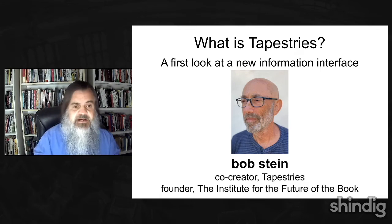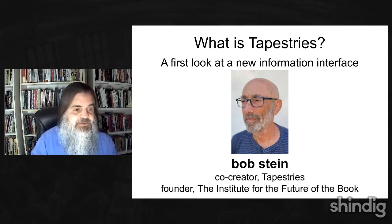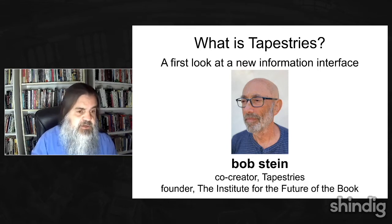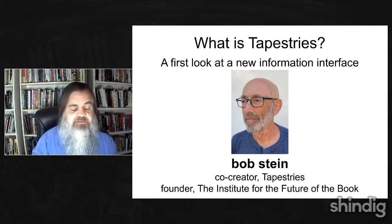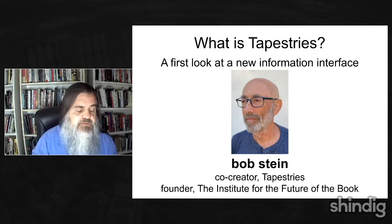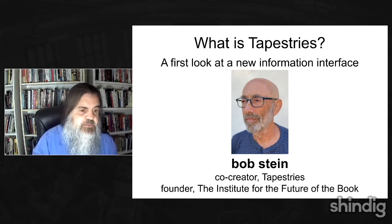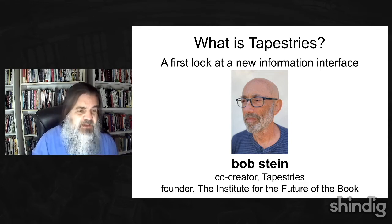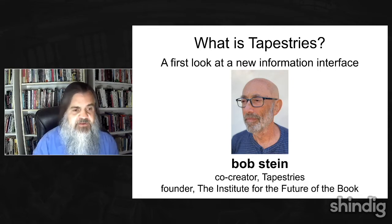Back in the 1990s he created the Criterion Collection of movies — I'm now a continuous subscriber to the Criterion streaming service. He also kicked off the first great series of CD-ROMs called Voyager, which broke new ground in interactive media. Since then he's produced more projects, from the CommentPress plugin for WordPress to tools like TK3 and Sophie, much of it under his ongoing project called the Institute for the Future of the Book.